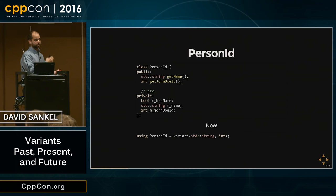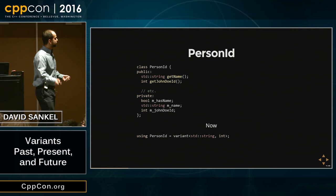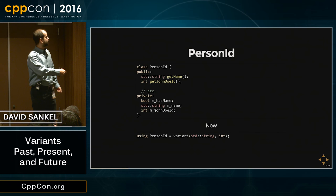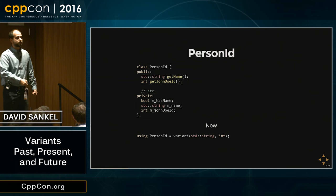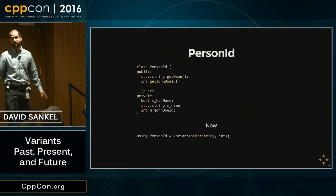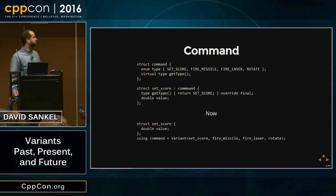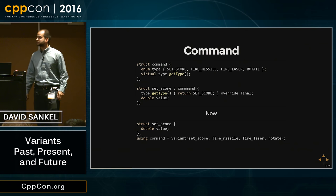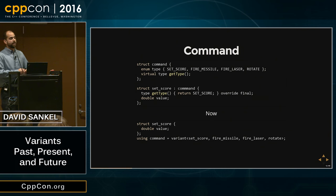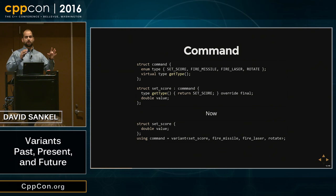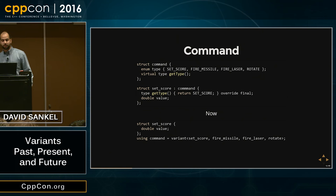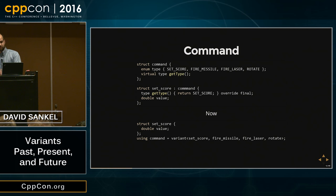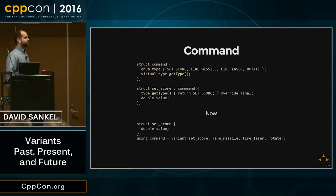Going back to our person ID, which is either a name or a John Doe ID, the way you put that into a variant is: using PersonID equals variant<string, int>. A person ID is either going to be a string or an int — as simple as that. For the command example, you figure out all the things that are commands, give each the data member it needs, and say using Command equals variant<SetScore, FireMissile, FireLaser, Rotate>. A command is either a SetScore, a FireMissile, a FireLaser, or a Rotate.